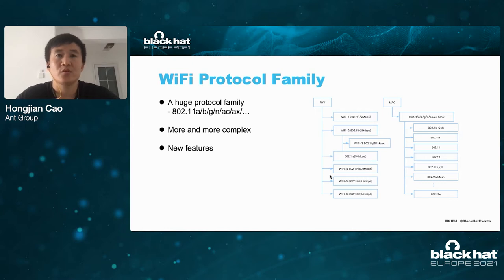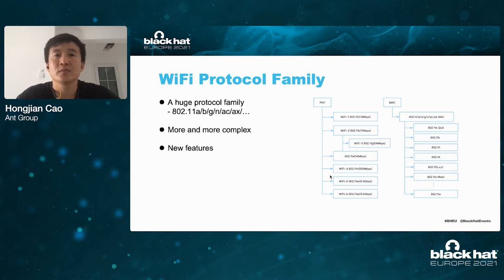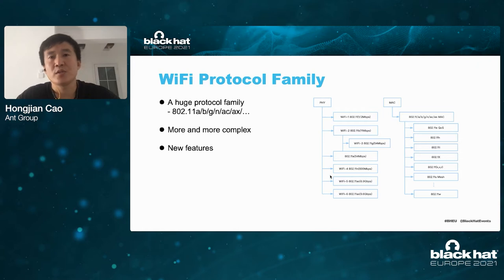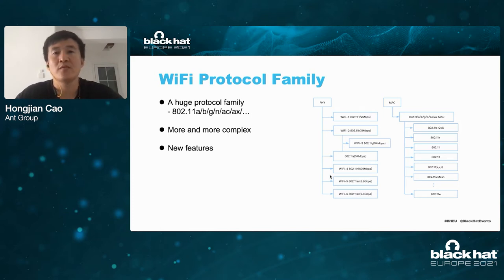Wi-Fi protocols are a huge family that are getting more and more complex, with many new features added as they evolve. For example, the communication rate is getting faster, roaming and mesh networking are supported, and security is getting better — but it is still not perfect. When mining Wi-Fi vulnerabilities, we can start from the protocol itself to find the flaws.